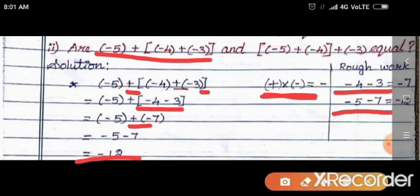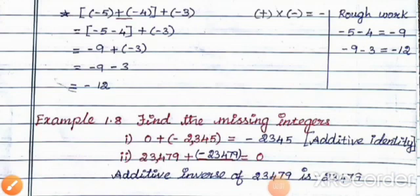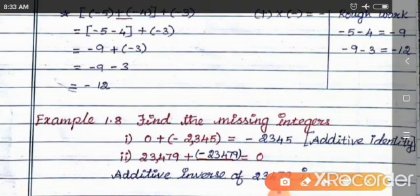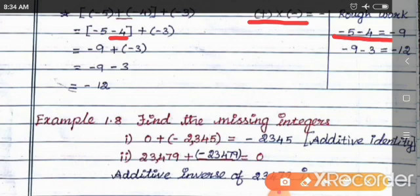Now the second grouping: minus 5 plus of minus 4, plus of minus 3. First, minus 5 plus of minus 4 — same sign means add: minus 5 minus 4 gives minus 9. Then minus 9 plus of minus 3 — plus into minus gives minus — so minus 9 minus 3. Add 9 and 3 to get 12, so the answer is minus 12. Both groupings give the same result.